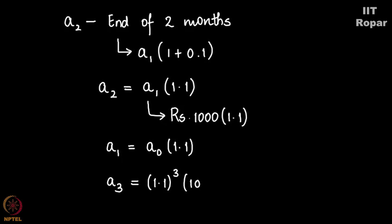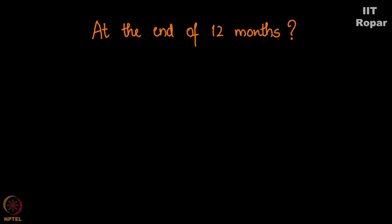So A3 is 1.1 cube times A0 which is 1000, so A3 is 1.1 cube times 1000 which is 1331 at the end of three months.